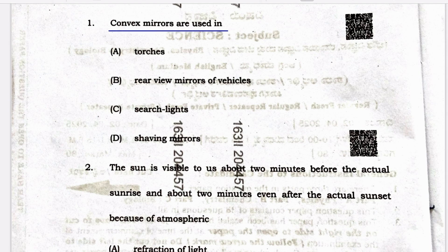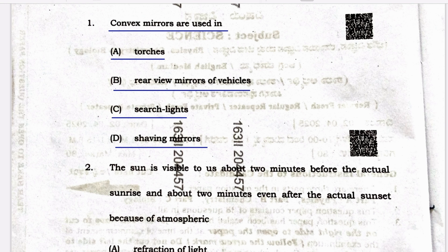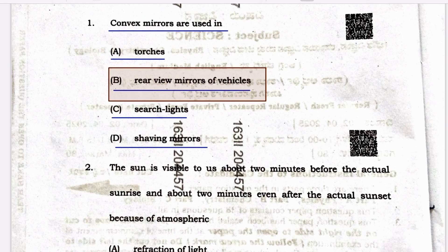First question: convex mirrors are used in — option A: torches, option B: rear-view mirrors of vehicles, option C: search lights, and option D: shaving mirrors. The correct answer for this question is option B, rear-view mirrors of vehicles.